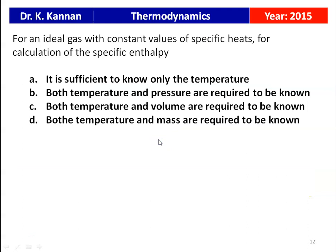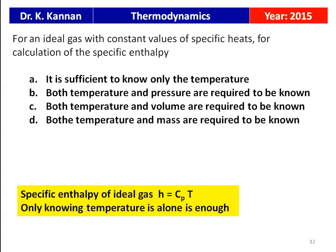Next question from the 2015 question paper: for an ideal gas with constant specific heats, for calculation of specific enthalpy, is it sufficient to know only the temperature; both temperature and pressure; both temperature and volume; or both temperature and mass? For an ideal gas, H = Cp × T. Only knowing the temperature is enough. The correct answer is Option A: it is sufficient to know only the temperature.